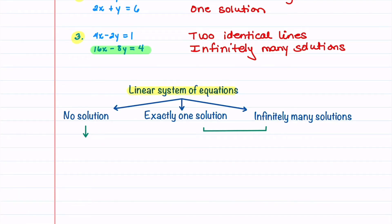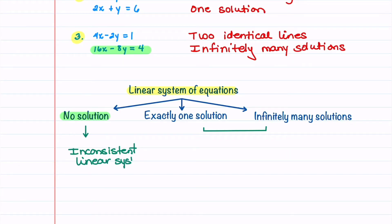Looking at the terminology: when a linear system has no solution, we say it is an inconsistent linear system. When a linear system has exactly one solution or infinitely many solutions, we say the linear system is consistent.